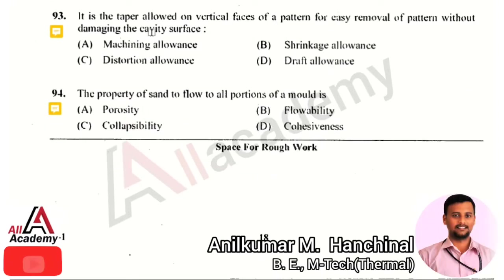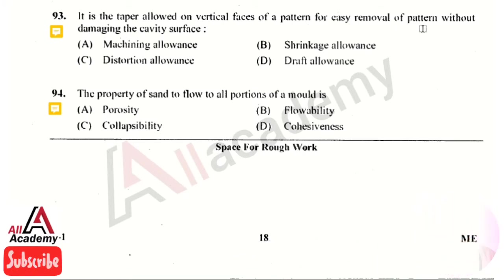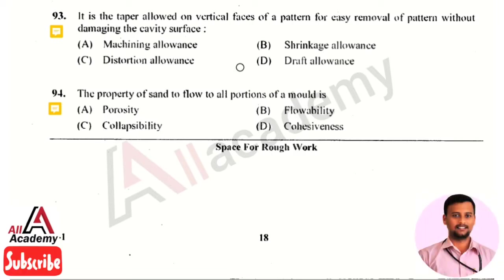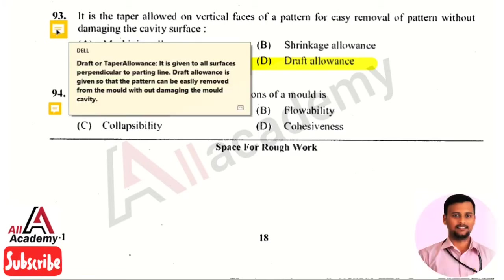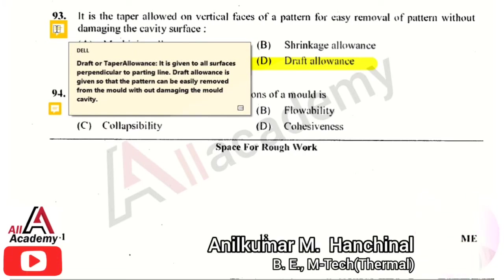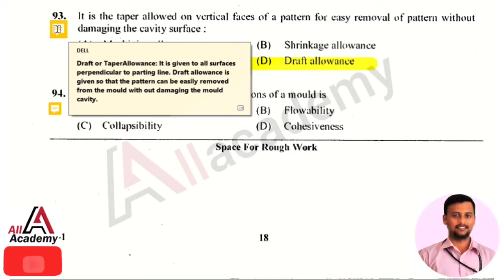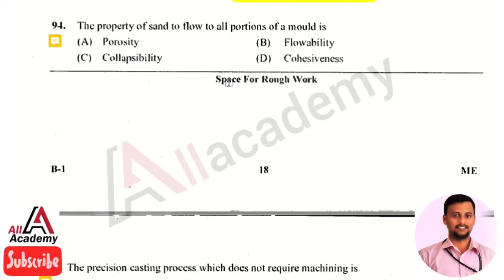The next question: the taper allowed on a vertical surface of a pattern for easy removal without damaging the cavity surface — the right answer is option 4, that is draft allowance. Draft or taper allowance is given to all surfaces perpendicular to the parting line. Draft allowance is given to the pattern so that it can be easily removed from the mold without damaging the mold cavity.